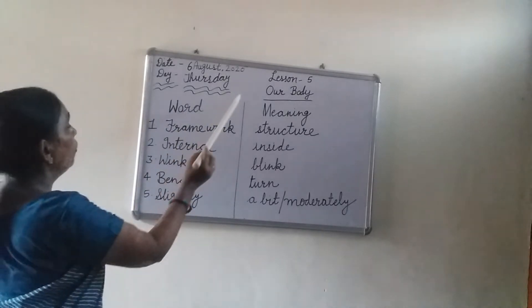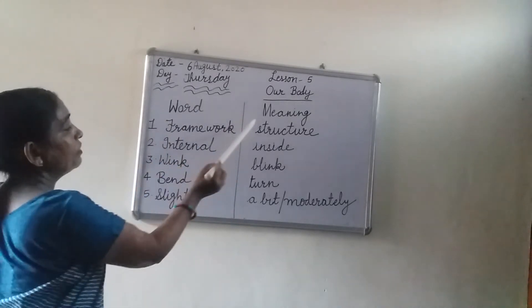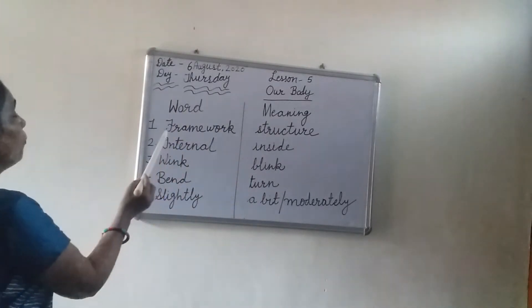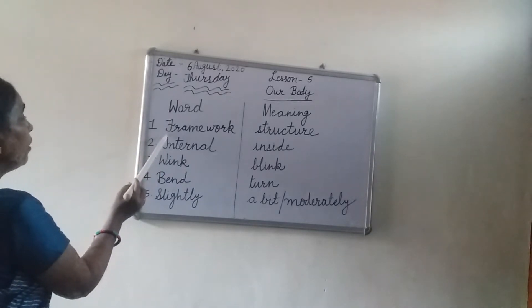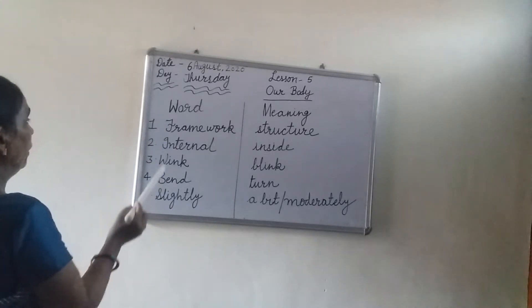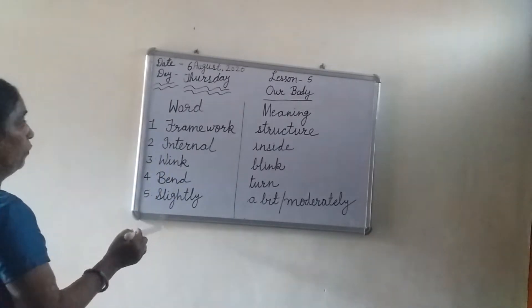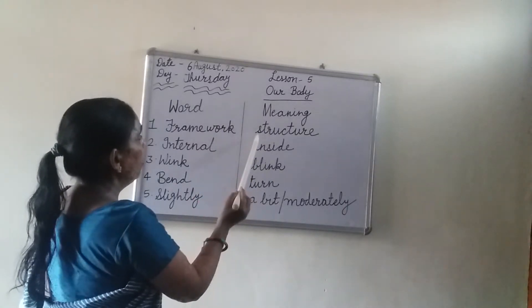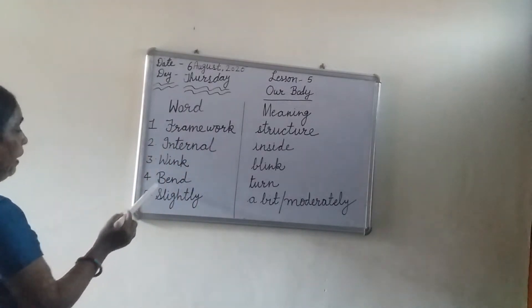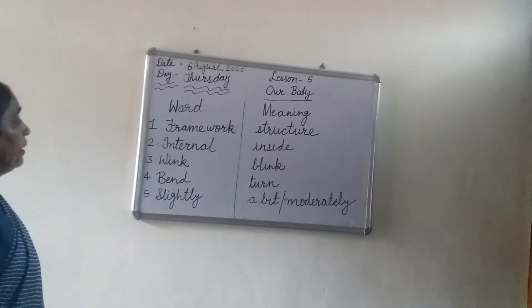उसके बाद आप page के बीच में एक line draw करोगे. Line के इस तरफ आप लिखोगे word, और इस तरफ आप लिखोगे meaning. Word के नीचे word, meaning के नीचे meaning. जब आप word लिखोगे, तो हर word का first letter आप capital लिखोगे. Meaning लिखते हुए first letter आप small लिखोगे. जैसे मैंने word का first letter capital लिखा है और meaning का first letter small लिखा है. Let us start word meaning now.